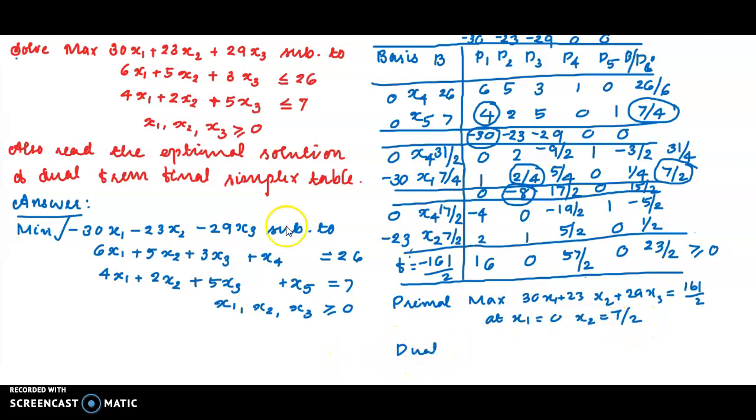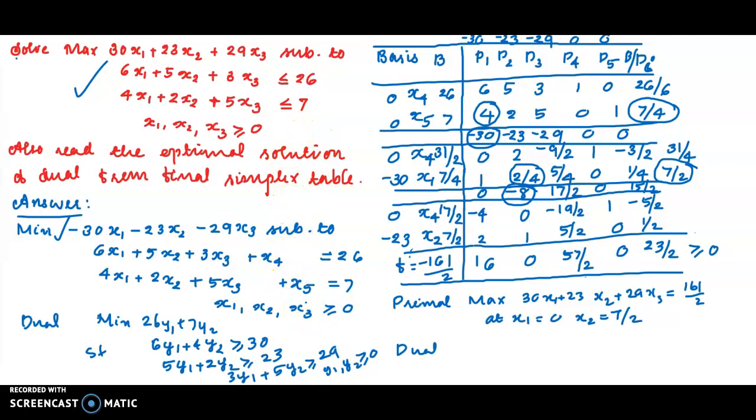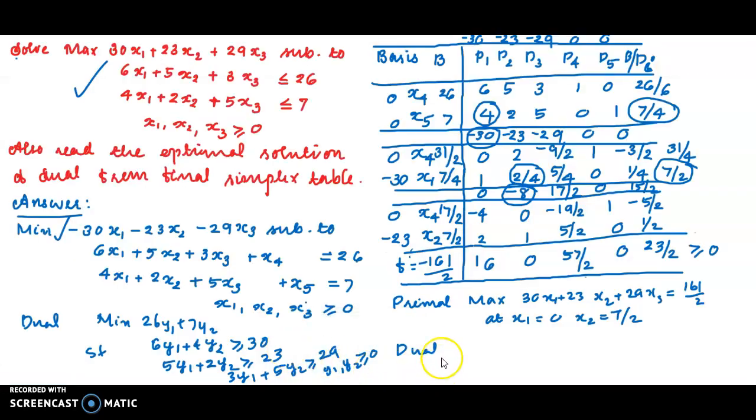Dual of the problem. Red color is the problem. Dual is maximization less than or equal to, dual minimizes. 26y₁ plus 7y₂ subject to constraint. Constraint says that x₁, y₂ is equal to 6y₁ plus 4y₂ greater than or equal to 30. 5y₁ plus 2y₂ greater than or equal to 23. x₃ is 3y₁ plus 5y₂ greater than or equal to 29. y₁, y₂ greater than or equal to 0.